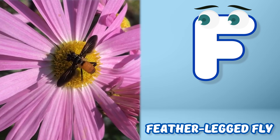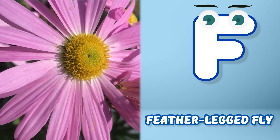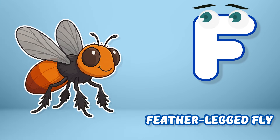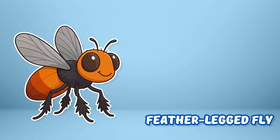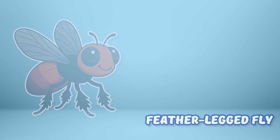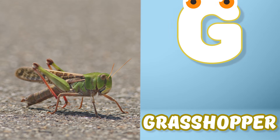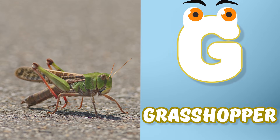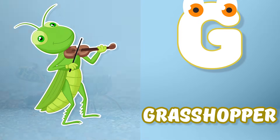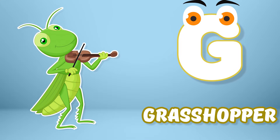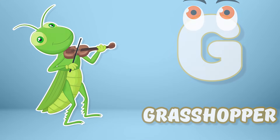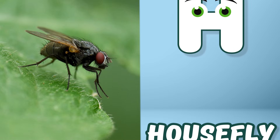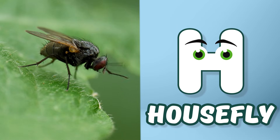F is for feather-legged fly. Feather-legged fly. F is for feather-legged fly. F-f-f. G is for grasshopper. G-g-grasshopper. G is for grasshopper. G-g-g.